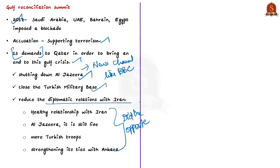Qatar enhanced its relation with Iran. When Saudi Arabia and Emirates airspace was closed, Qatar asked Iran for access, and Iran was more than happy to give its air and sea space. Al Jazeera is still live and going well. With respect to Saudi Arabia's demand to close the Turkish military base, Qatar invited more Turkish troops, resulting in strengthening its ties with Ankara. Qatar is eager to play a bigger role in West Asia and played an important role in the US-Taliban deal. It also continues to host talks between Taliban representatives and the Afghan government.